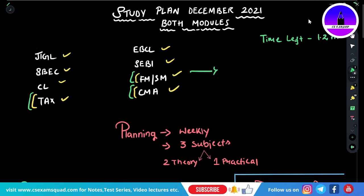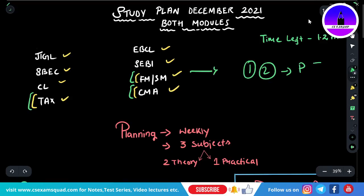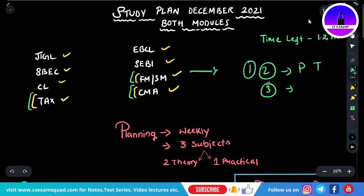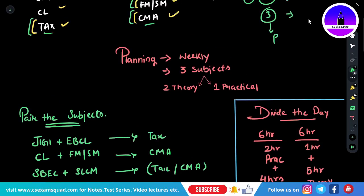When I gave the plan for the first module, I told students one day two subjects - one practical and one theoretical. But for both-group students, you are extra powerful. You have to study three subjects in a day: two theory subjects and one practical subject. The practical subject in this sense means the MCQ papers - Tax, FM, SM, and CMA. Three subjects a day is how students crack the examination.